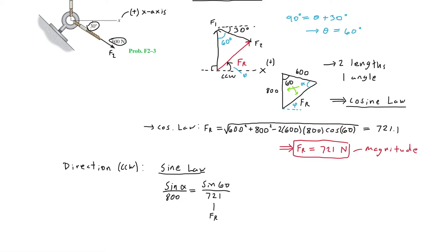Isolating sine alpha, we get sine alpha equals sine 60 over 721 times 800. Now we take the sine inverse of the right side, which equals 0.9609. So alpha equals arc sine of 0.9609, which equals 73.9 degrees.